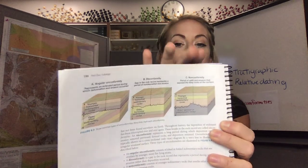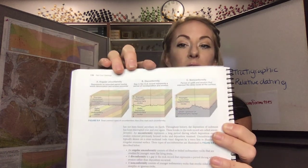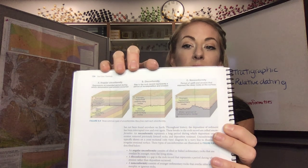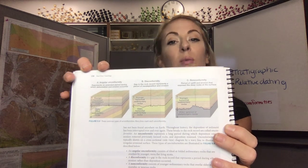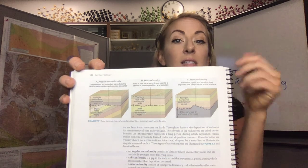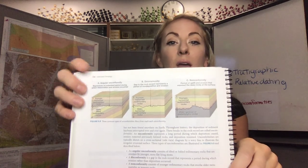So angular unconformities are at an angle. Disconformities, you have dips in the boundary. Whilst a nonconformity, you do not have the same type of rock. You'll have igneous and sedimentary rock in the same area.